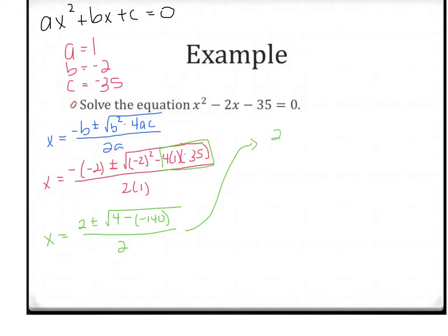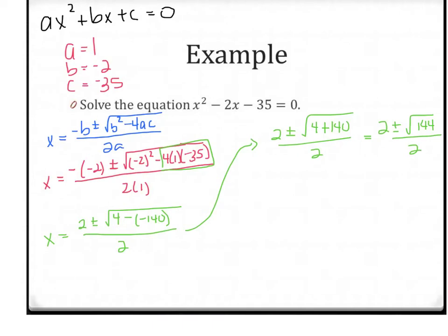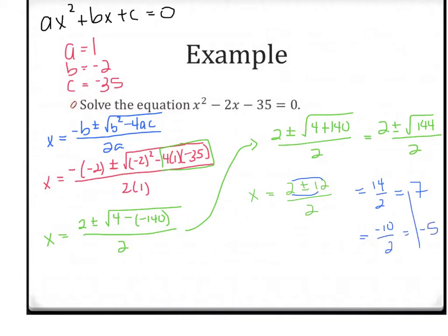That leads us to the square root of 4 plus 140, because the minus and negative makes a plus, which gives us 2 plus or minus the square root of 144, all over 2. The square root of 144 is exactly 12, so we get 2 plus or minus 12, all over 2. From here, 2 plus 12 is 14 over 2, which gives 7 — that's one answer. The other answer is 2 minus 12, which is negative 10 over 2, giving negative 5. Those are your two answers.